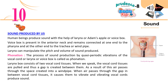Phonation: the process of sound production by quasi-periodic vibrations of the vocal cord, larynx, or voice box is called phonation. The larynx consists of two vocal cord tissues. When we speak, the vocal cord tissues are pulled and a gap is created between them. Air passes through this space into the windpipe. As air passes through the gap between the vocal cord tissues, it causes them to vibrate, and the vibrating vocal cords produce sound.